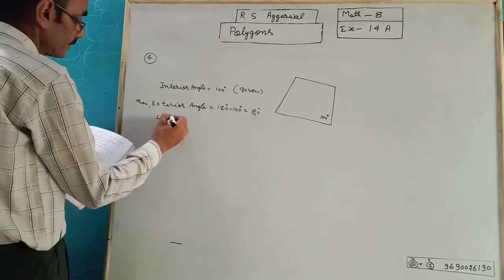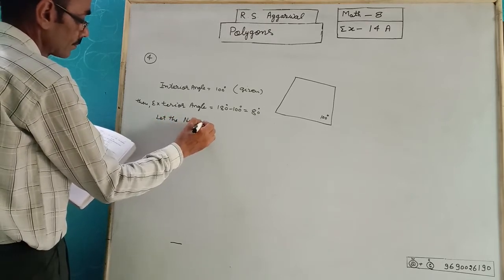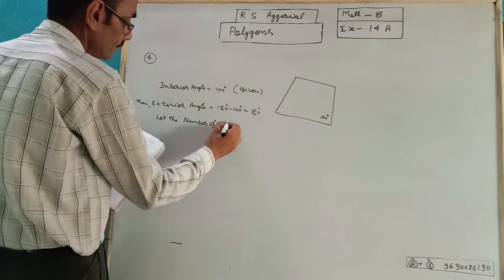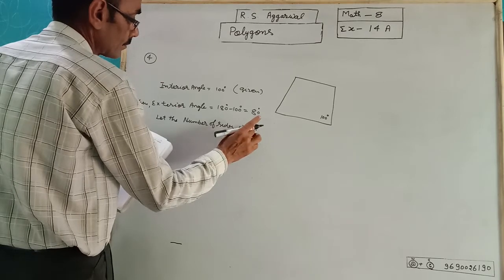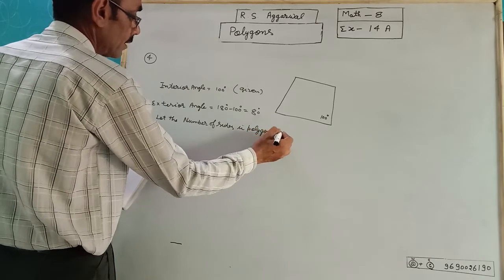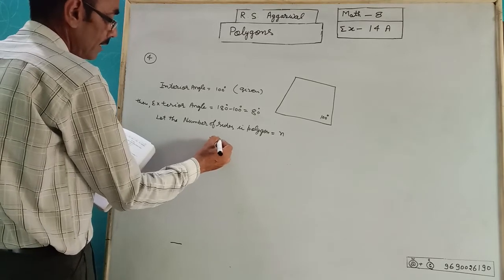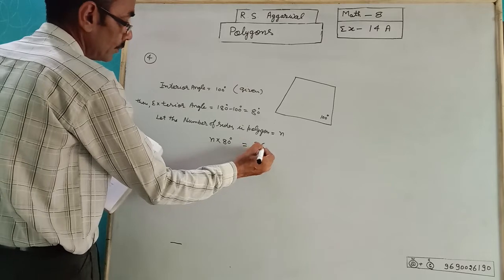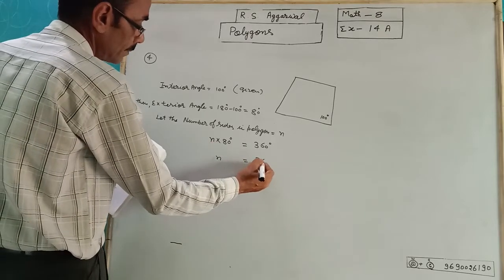Let the number of sides in the polygon be N. The sum of all exterior angles equals N into 80, which equals 360 degrees. So N will be 360 divided by 80.